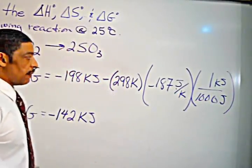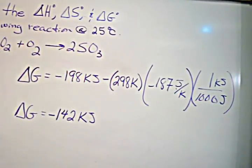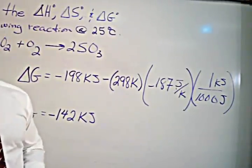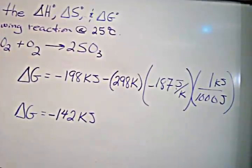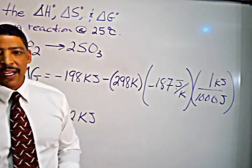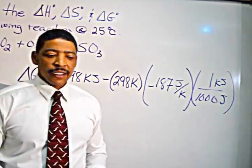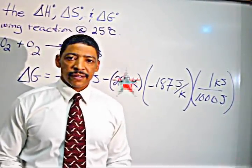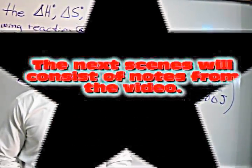The calculation yields a final answer of negative 142 kilojoules. In other words, the reaction between sulfur dioxide and oxygen to yield sulfur trioxide is indeed spontaneous.